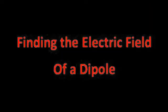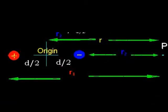To find the electric field near a dipole at point P on the x-axis, let us consider a dipole with its center at the origin, with each charge a distance d over 2 from the origin. r is the distance from the origin to point P.